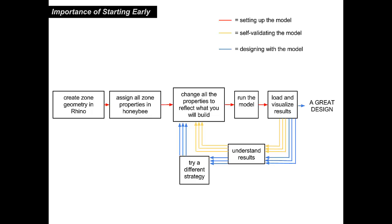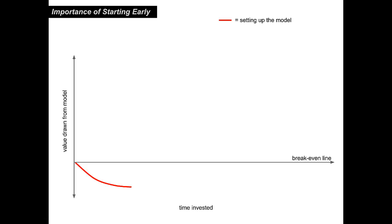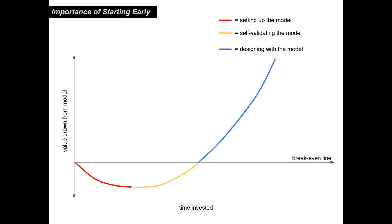To visualize how this value happens on a graph — if you have value drawn from a model on the y-axis versus the time you invested on the x-axis — in the first part when you're just setting up the model, you're kind of going into the red, investing a lot of time and getting garbage without drawing much out. But as you begin to understand it and finally get something representative of reality, you're at the break-even line. Then it becomes a kind of exponential curve, because once you have that model, you're able to run through it very fast and pull increasing value out as you use it to really inform your design and make it better. This is the type of thing I want to be seeing in the next five years in all design practice.